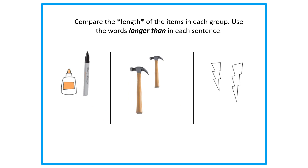I want you to compare the length of the items in each group. First, we're going to use the words 'longer than' in each sentence. Let's start looking at the first group. I see that we have a bottle of glue and what looks like a Sharpie or a marker. Let's take a look at which one is longer than the other. I'll give you 10 seconds to think about which one is longer. So I think you said that the Sharpie or the marker is longer than the glue bottle.